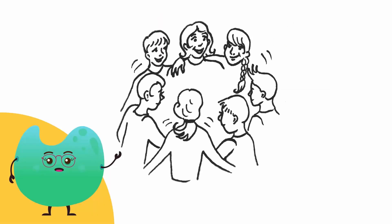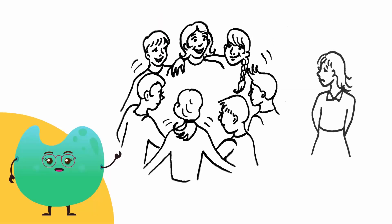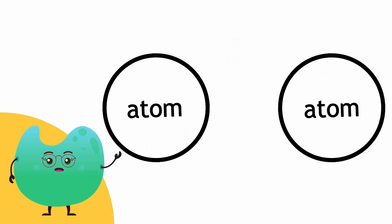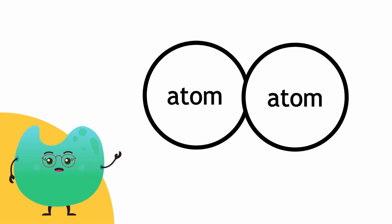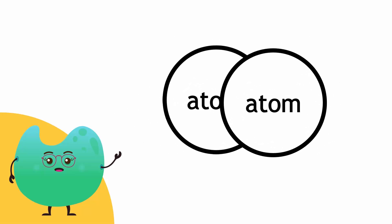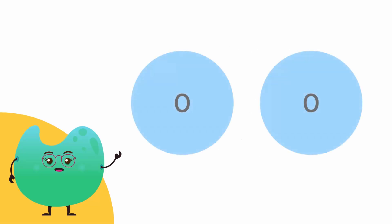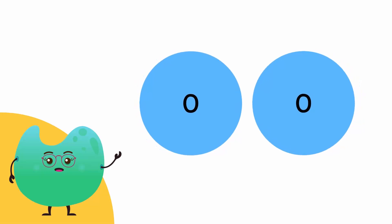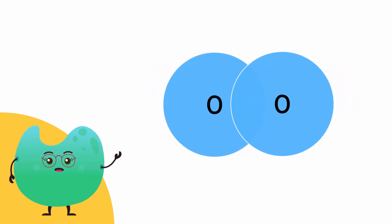Atoms are a bit like people — they usually prefer company to being alone. So they join up with other atoms to form what we call molecules. For example, oxygen atoms exist in the form of oxygen gas that we breathe in. Two oxygen atoms pair up to make what is called a molecule of oxygen, also known as O2.